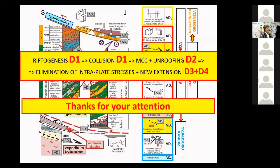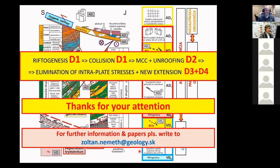Thank you for your attention. The final statement is very simple: D0, D1, D2, D4 — and so on — combined with orogenic cycle prefixes. If there are any questions I can send you papers; please contact me by email.